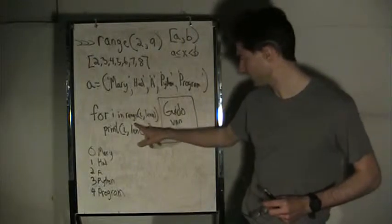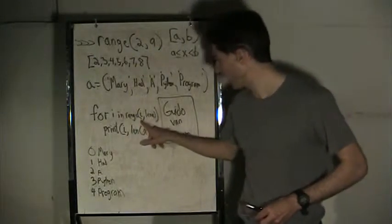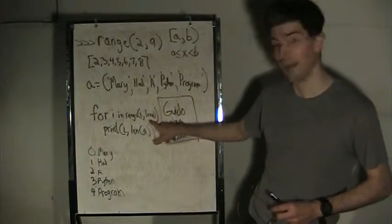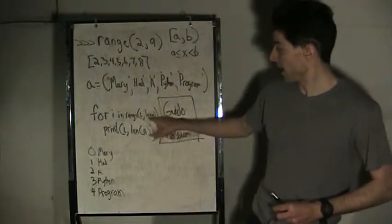So for I in range, I, comma, length of A. That's a length function. LNA. So that's kind of cool.